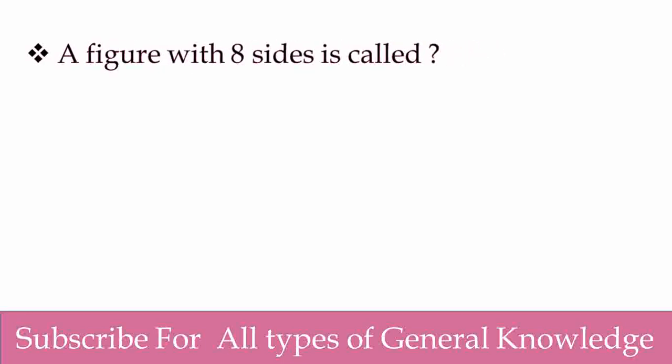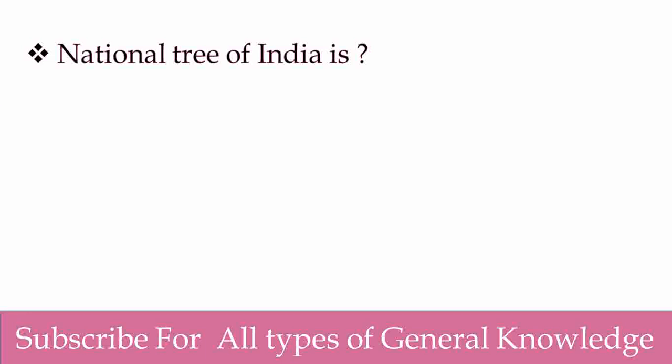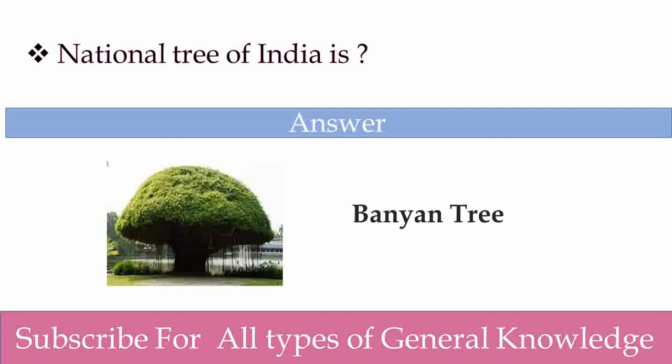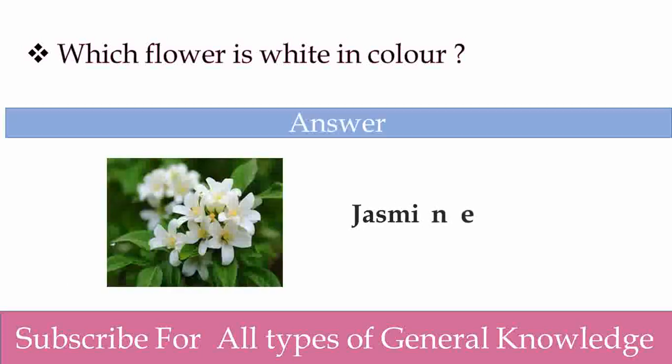A figure with eight sides is called? Octagon. Good. National tree of India is? Banyan tree. Good. Banyan tree is our national tree. Which flower is white in color? Jasmine. Yes, jasmine is white in color.